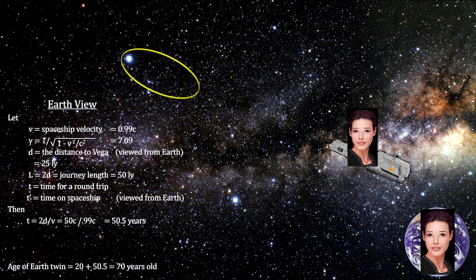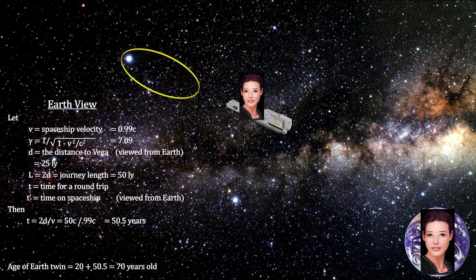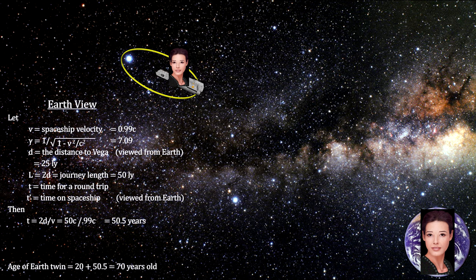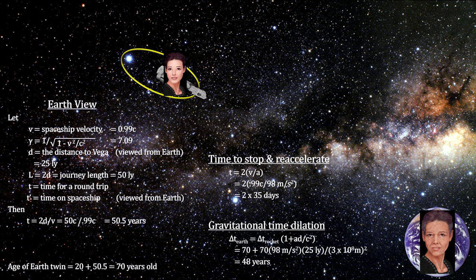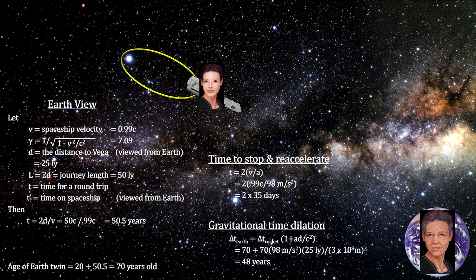At this rate, it would take her 35 days to decelerate to zero, and another 35 days to re-accelerate back to 99% of the speed of light. Gravitational time dilation shows that as her clock ticks 70 days, her twin's clock on Earth will have ticked 18,134 days. That's 48 years.